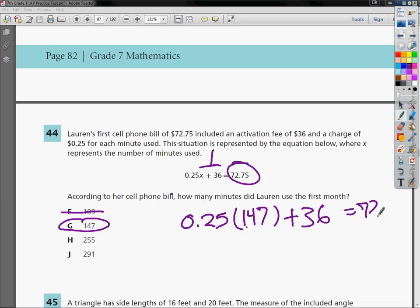If you plug in 255 or 291 both of those answers would give you values that are much greater than 72.75. And if we're going to plug in a number and have one side equal the other, that's a true statement to me. So either way is fine. You could use the fact that it's multiple choice against the state if you'd like to do that or if you'd just like to solve the equation because it's faster, that's okay too.